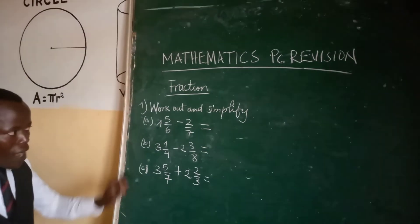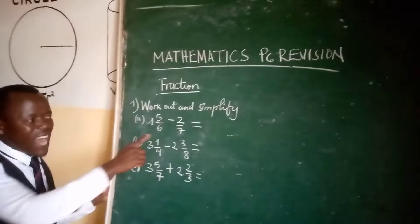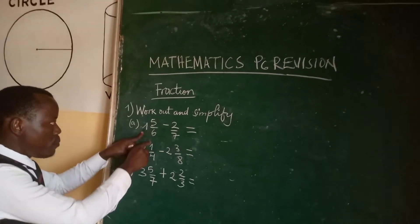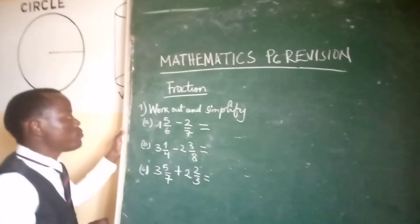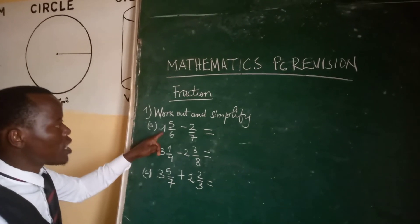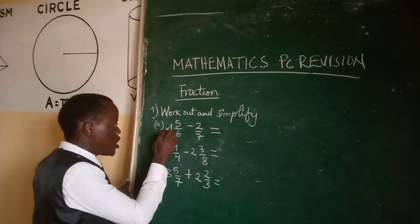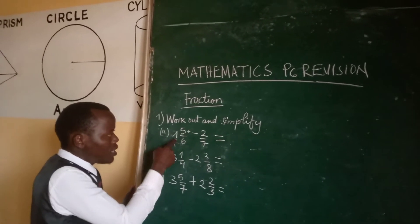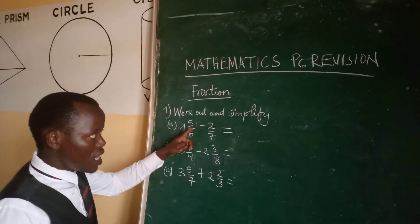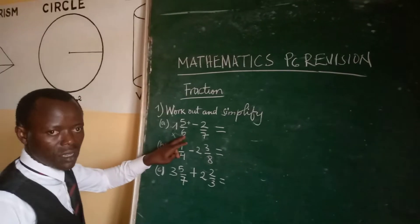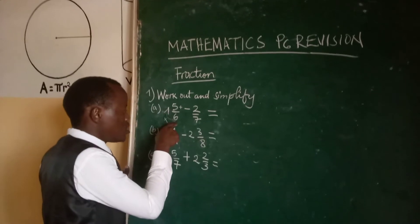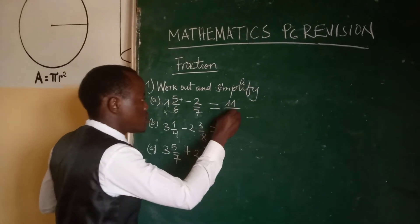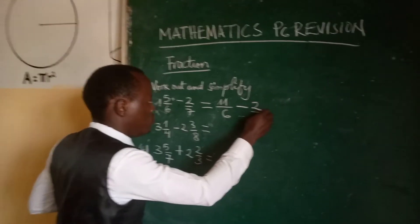If you have a mixed fraction in your equation, you cannot add immediately, you cannot subtract immediately. You first take this mixed fraction and turn it into an improper fraction. When you want to change a mixed fraction into an improper fraction, we take the whole number times the denominator, plus the numerator, and keep the same denominator. So we take 1 times 6 equals 6, plus 5 equals 11. That gives us 11 over 6 minus 2 over 7.